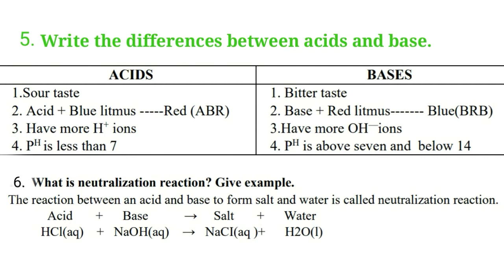Next question: write the differences between acids and bases. Acids are sour in taste; bases are bitter in taste. Acids turn blue litmus into red; bases turn red litmus into blue. Acids have more H⁺ ions; bases have more OH⁻ ions. The pH of an acid is less than 7; the pH of a base is more than 7 but below 14.